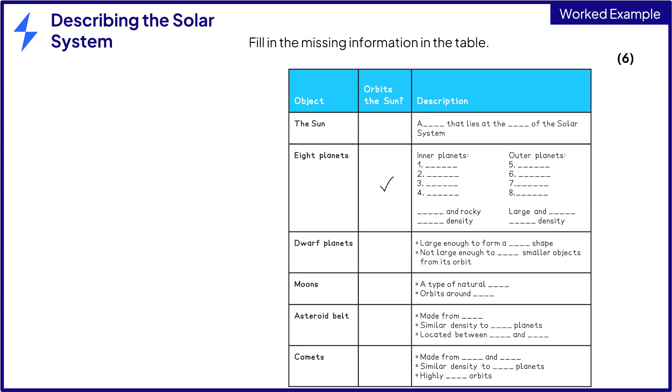Let's have a look at an example question. We need to fill in the missing information in the table using the correct words, and ticking in this column if the object orbits the sun. There are six marks available, so one for each correct row.